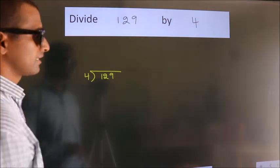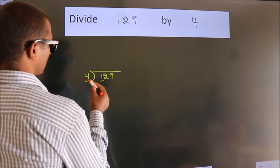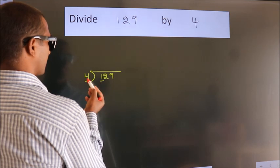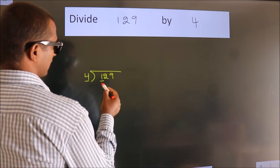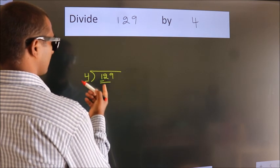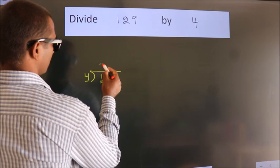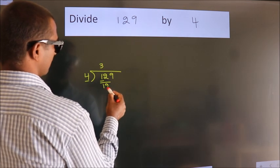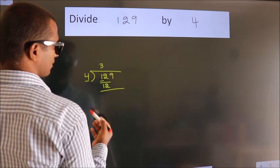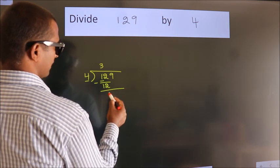Next, here we have 1 and here 4. 1 is smaller than 4, so we should take 2 numbers: 12. When do we get 12 in the 4 table? 4 times 3 is 12. Now we subtract and get 0.